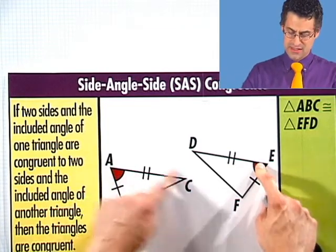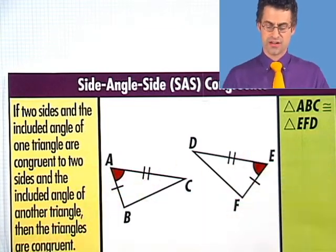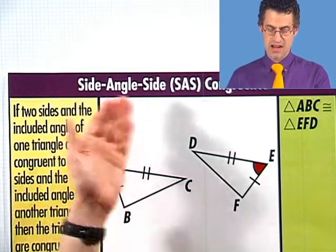When that happens, these triangles are congruent. Why? By the method of side-angle-side.